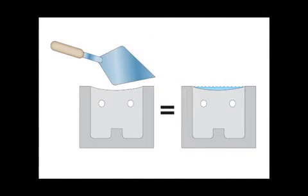Most masons screed off a bond beam or poured wall with the heel of their trowel. This can lead to a concave surface, which will lead to the ponding of water. The longer the water sits in the wall, the more damage it will cause.